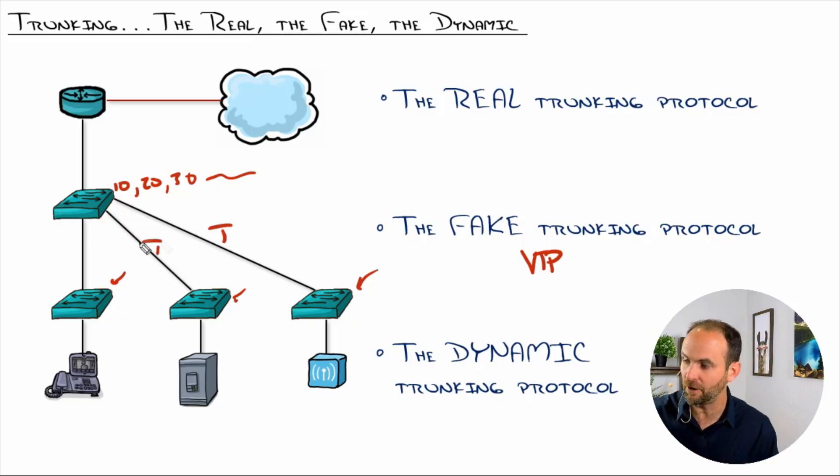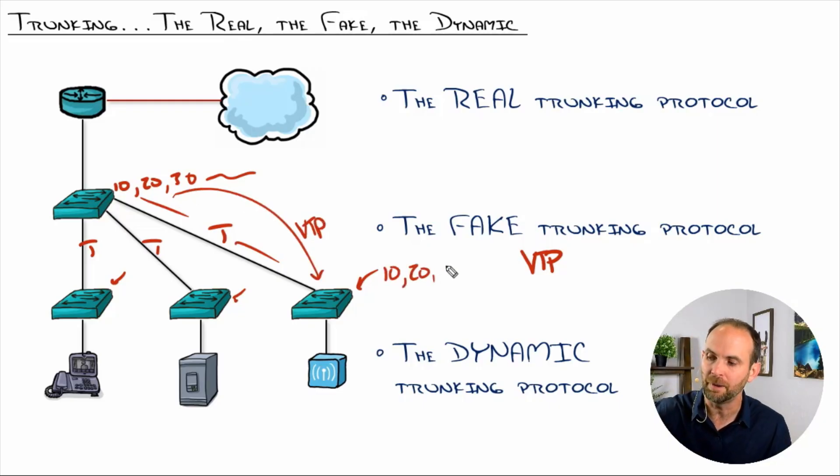So, if you have this configured as what kind of trunk? 802.1Q trunk, right? If that is configured as a real trunk, then the fake trunking protocol, VTP, can actually replicate the VLANs so they automatically show up on the switches down below. Now, that doesn't mean the ports automatically get assigned to the VLANs. That's still your and I's job, right? We have to have some work that we do. So, we have to go down to the switch and assign the ports, but we do not have to create the VLANs if we're using the fake trunking protocol called VTP because it's not a trunking protocol at all. It's a replication protocol that works over trunk links, right?